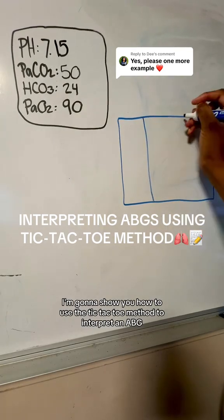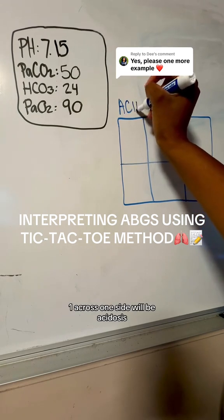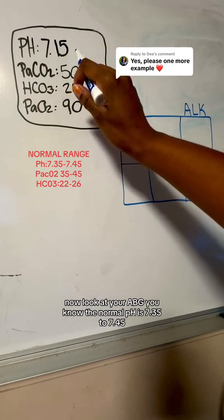I'm going to show you how to use the tic-tac-toe method to interpret an ABG. Draw a box with two lines down and one across. One side will be acidosis, the other side will be alkalosis. Now look at your ABG.